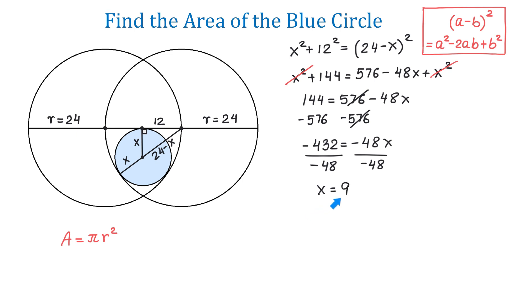So, this is the radius of the blue circle, and now, we can use this formula to find the area. So, here, we will have pi multiplied by 9 squared, which we can write as 81 pi. So, the area of the blue circle is 81 pi square units.